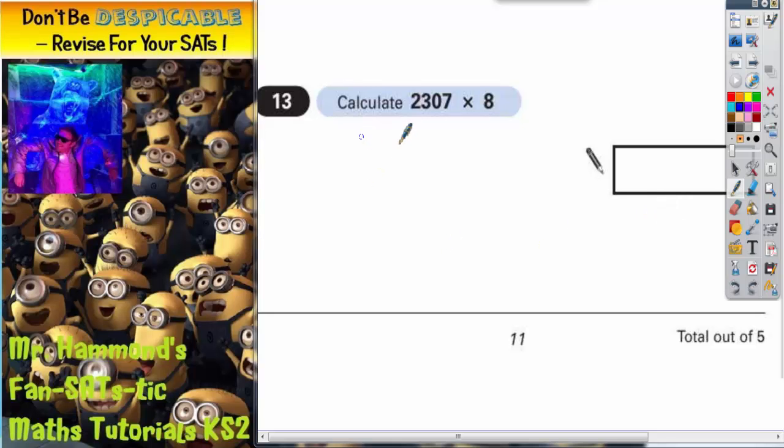Question 13. Calculate 2307 multiplied by 8.